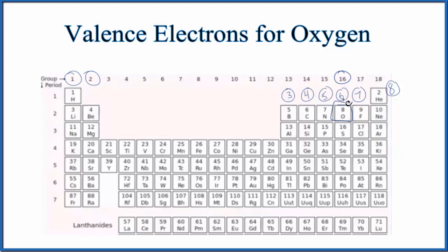That means it has six valence electrons. Sulfur, that's also in group 16, and it has six valence electrons.